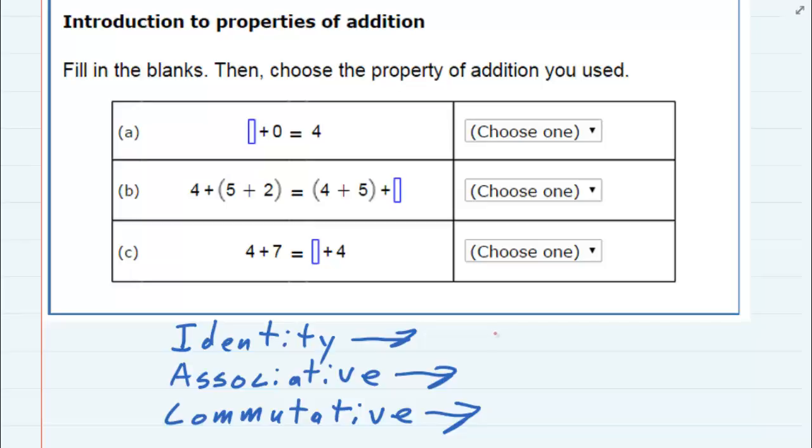Identity means that if you take a number, any number, and you add zero to that number, you get the original number that you started off with. It's kind of an identifying thing because starting with a number and adding zero doesn't change anything. You get the same thing you started out with.